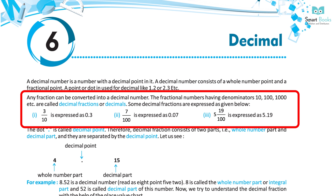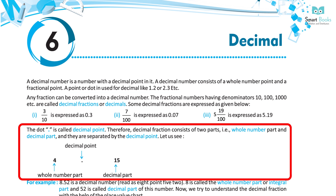Some decimal fractions are expressed as given below. First, 3 upon 10 is expressed as 0.3. Second, 7 upon 100 is expressed as 0.07. Third, 5 and 19 upon 100 is expressed as 5.19. The dot is called the decimal point. A decimal fraction consists of two parts: the whole number part and the decimal part.